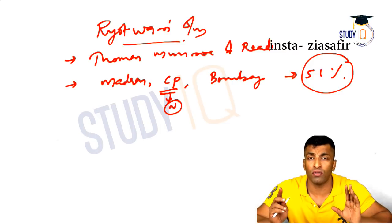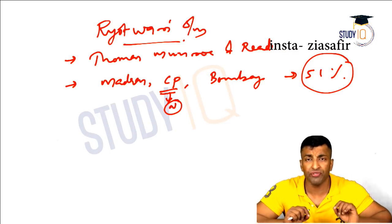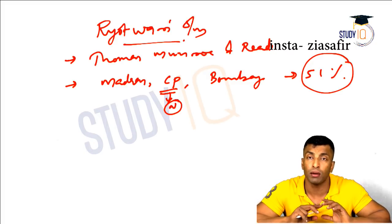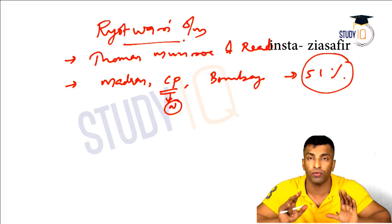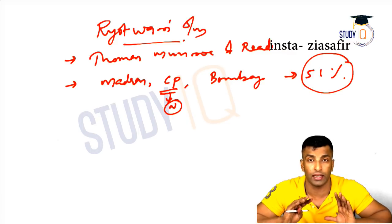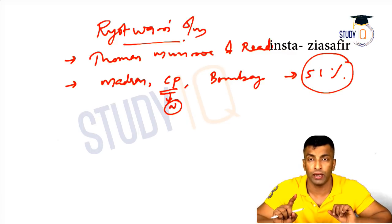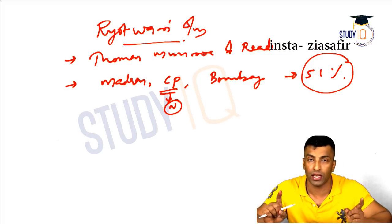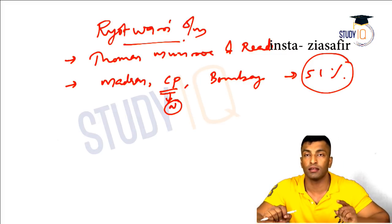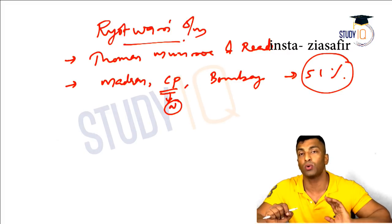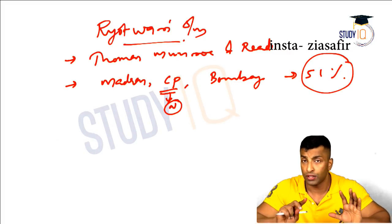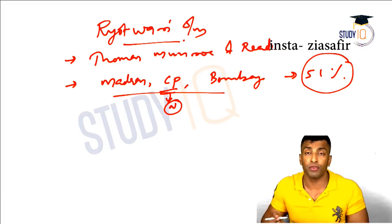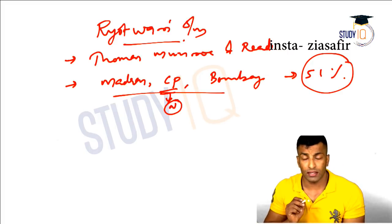One thing students are always confused about: when Ryotwari settlement was introduced, permanent settlement was not abolished. Permanent settlement continued in eastern India, while Ryotwari was in the southern, western, and central parts of India. The two systems coexisted in different regions.